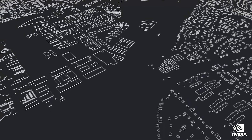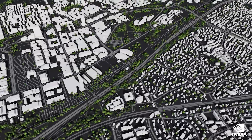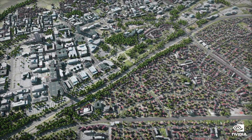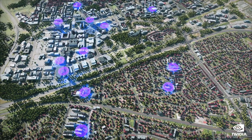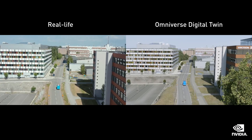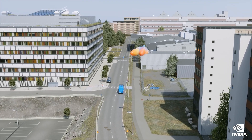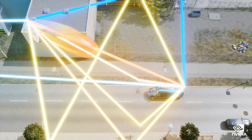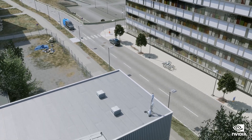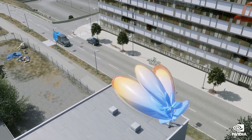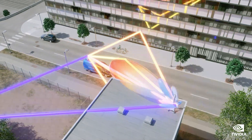In Omniverse, Ericsson builds city-scale models that are physically accurate down to the materials of the buildings, vegetation, and foliage. Then wireless network components are added, including the precise location, height, and antenna pattern of each transmitter. Ericsson built a custom Omniverse extension, enabling them to integrate radio propagation data and leverage Omniverse's RTX accelerated ray tracing to quickly visualize and calculate the quality of the signal at every point in the city. Because Omniverse materials are physically accurate, the intensity of reflections are precisely determined. Antenna beam forming and signal paths can be accurately simulated and visualized.